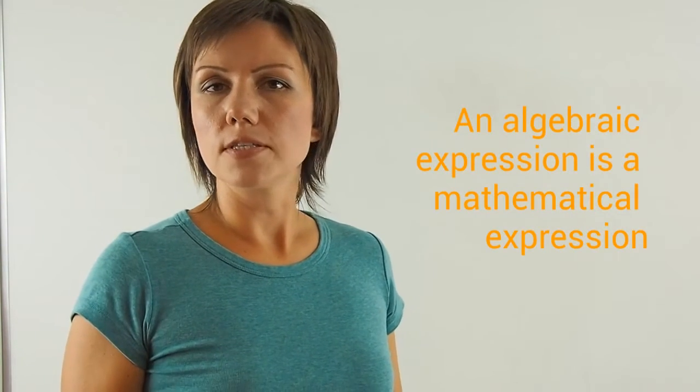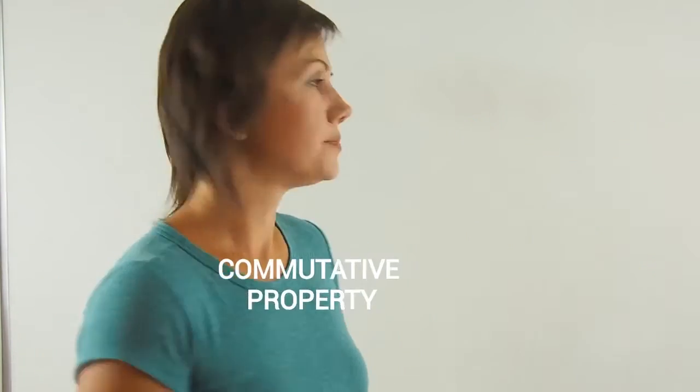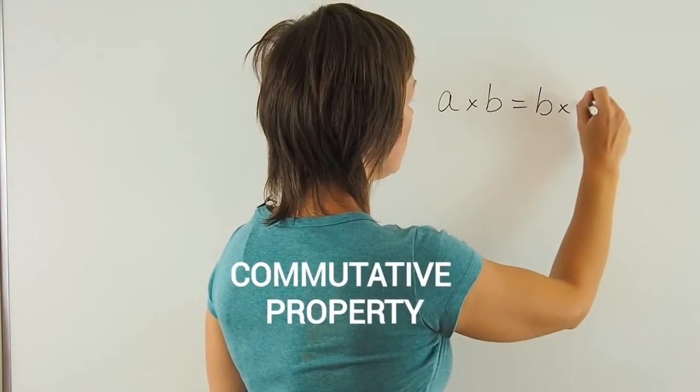In order to simplify expressions, it's important to remember the three multiplication properties. The first one is commutative. A times B equals B times A.